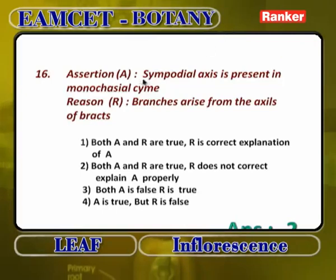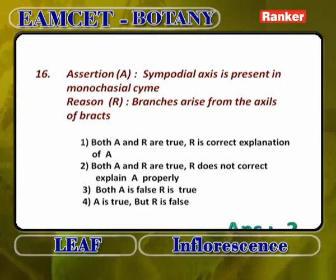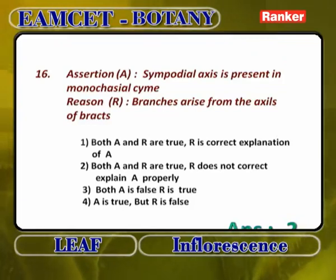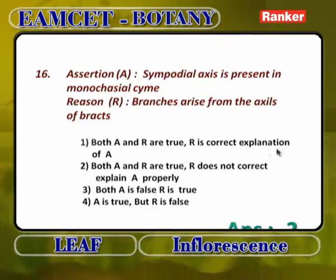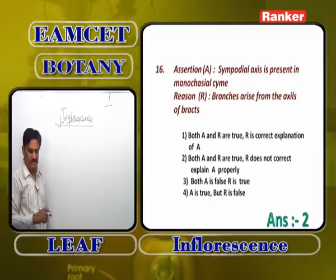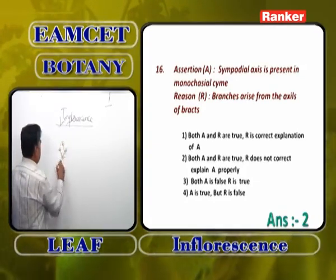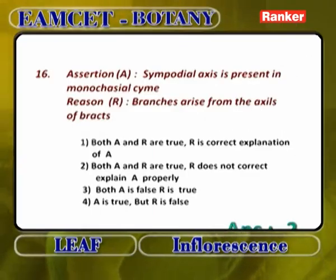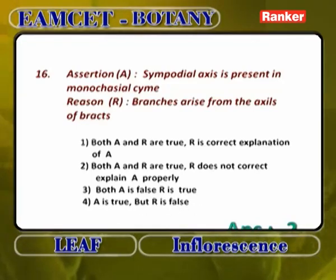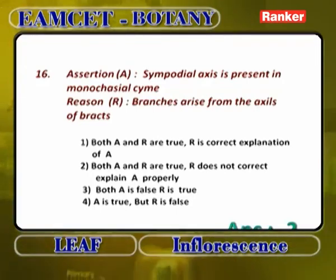Assertion: Sympodial axis is present in monochasial cyme. Reason: Branches arise from the axils of the bracts. Answer: 3 — A is true, R is false. Sympodial axis in monochasial cyme is correct because flowers are produced opposite to the bracts, forming a pseudo-axis. But branches do not arise from the axils of the bracts — they arise opposite to the bracts.